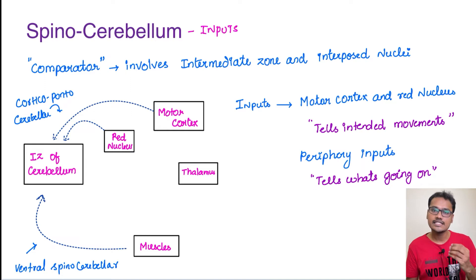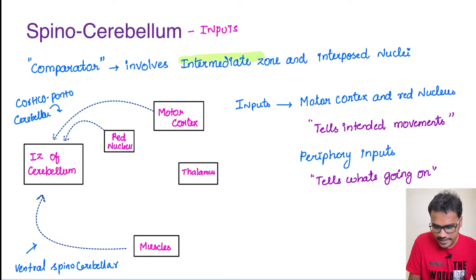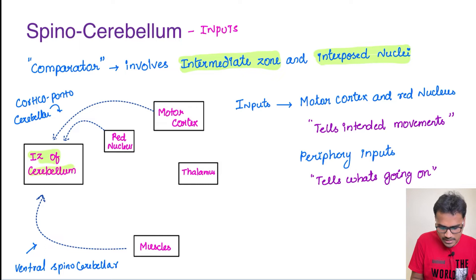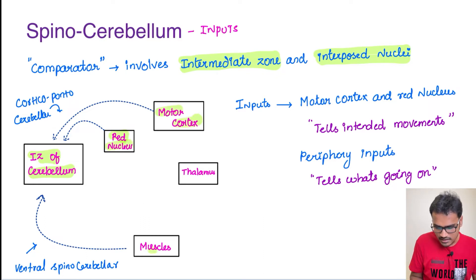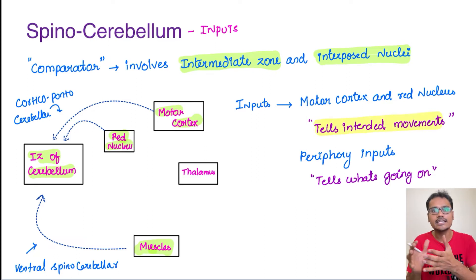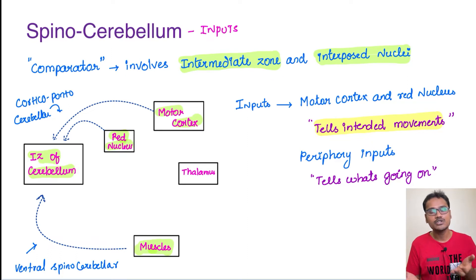The spinocerebellum has various inputs and outputs. Its most important components include two structures: one is the intermediate zone, and another is the interposed nuclei, which is one of the deep nuclei of the cerebellum. The intermediate zone receives inputs from various places — the red nucleus, the motor cortex, and the peripheral muscles. This functions as a comparator. It has two influences: one from the higher centers like the motor cortex and red nucleus, which tell the intended action — the blueprint. The cerebellum compares this blueprint with the actual state of the muscles and changes its action accordingly.